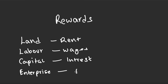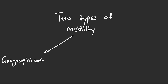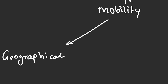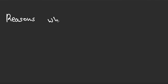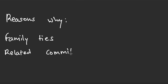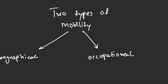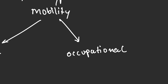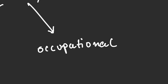We have two types of factor mobility. Geographical mobility refers to the willingness of someone to relocate due to employment purposes. Reasons why they would not want to relocate include family ties, related commitments, and cost of living. Occupational mobility refers to someone changing jobs, and this can vary according to cost, training period, and educational requirements.